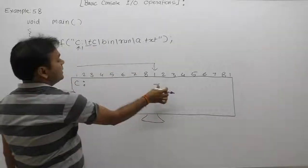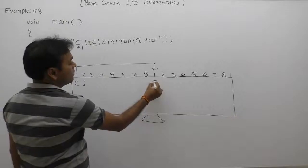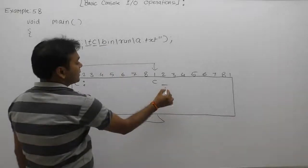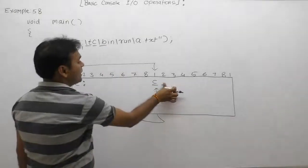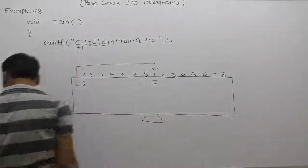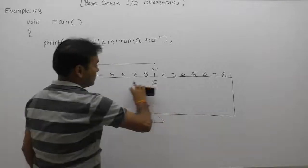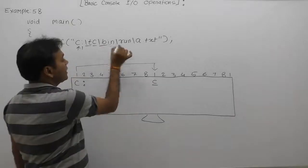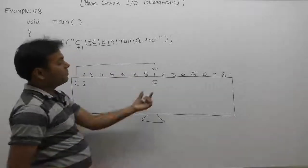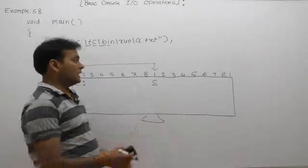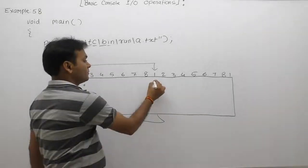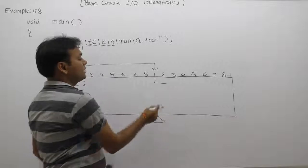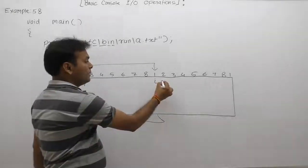Next, 'c' is again a printable character, so it will print 'c' at the current position, then the cursor moves to the next place. Again, backslash b — according to backslash b, the cursor will be shifted to the previous position, which is back inside 'c'. Next is 'i', which is printable and will be printed at the current position, meaning 'c' is replaced by 'i'. After printing 'i', the cursor moves to the next position.